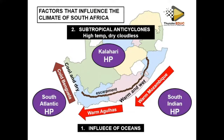Just as you hear the word anticyclones, these are high pressure systems affecting South Africa. There are three: the first is the South Indian high pressure system found on the Indian Ocean, the second is the South Atlantic found on the Atlantic Ocean, and somewhere inside South Africa we have the Kalahari, sometimes called the continental high pressure system.